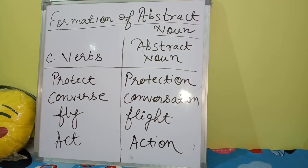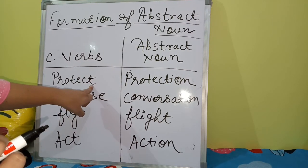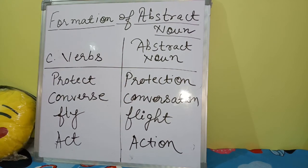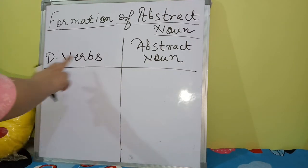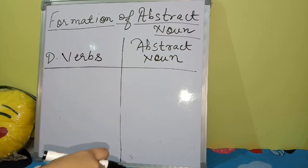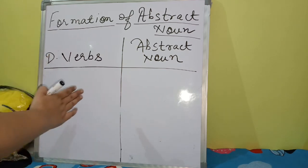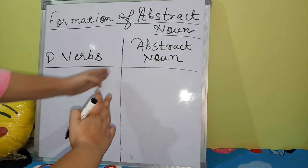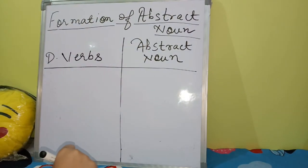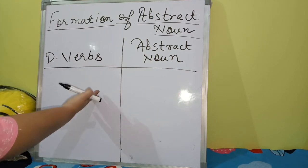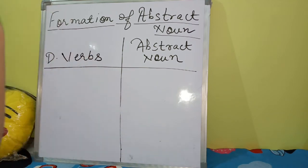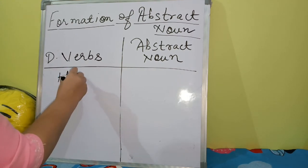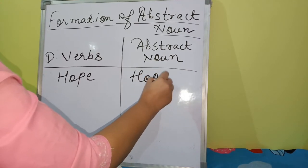Now we will also see some verbs that have the same form — their forms do not change when used as abstract nouns. These are verbs having the same form: as a verb, the word remains as it is and also functions as an abstract noun without any change.